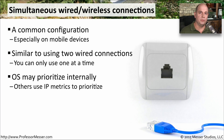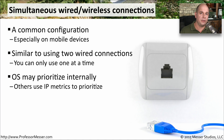Some operating systems will prioritize which interface to use based on a setting in the operating system itself — it doesn't use IP metrics or routing tables, but uses an internal determination. Other operating systems might use the routing table, determining what the best route will be and using that particular interface to send the traffic.